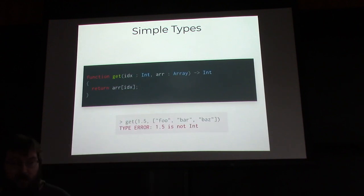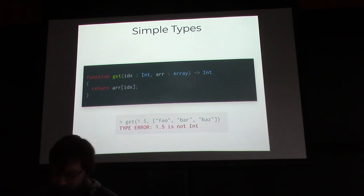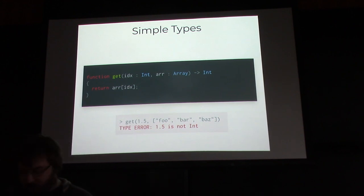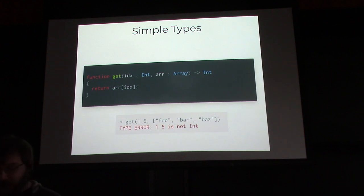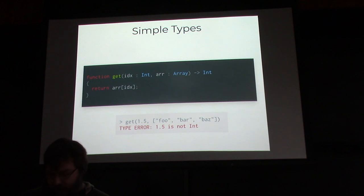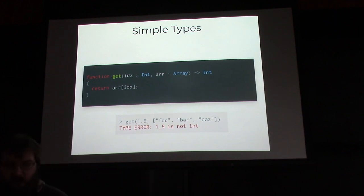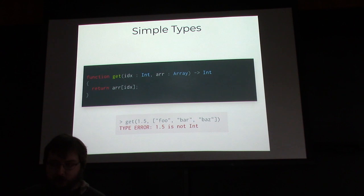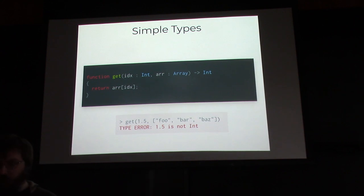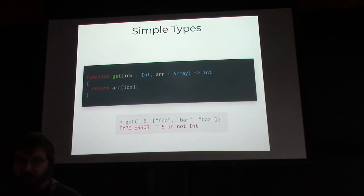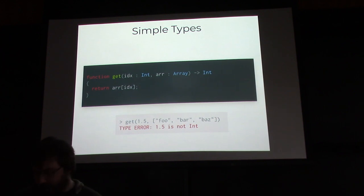By adding some types we can get the compiler to complain: 'hey, fix your code, you can't have an index that's not an integer.' We've added an int type to our index, so now if we try to call 1.5, we get a type error. This looks similar to the last error but there's a very important difference — this error occurs before your code runs, when you're writing or compiling your code, and therefore before your code can do any damage.